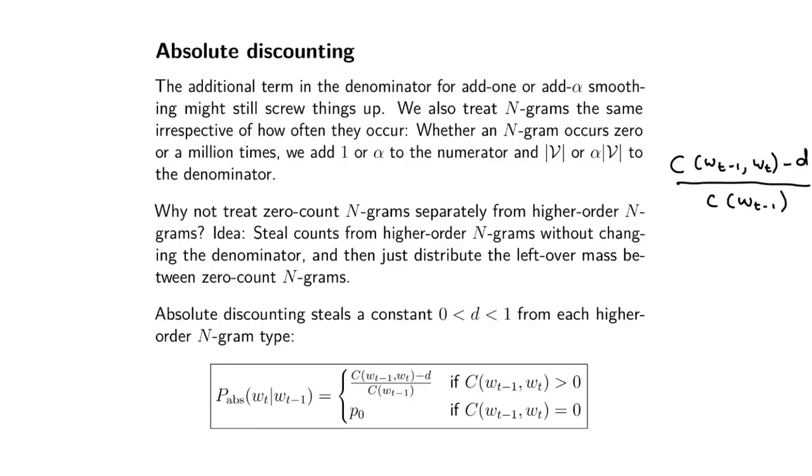You can make D a function of the count. For instance, D could scale linearly with the count so you steal more when the count is higher and distribute that down. The math gets extra hairy for figuring out how much mass to spread out.